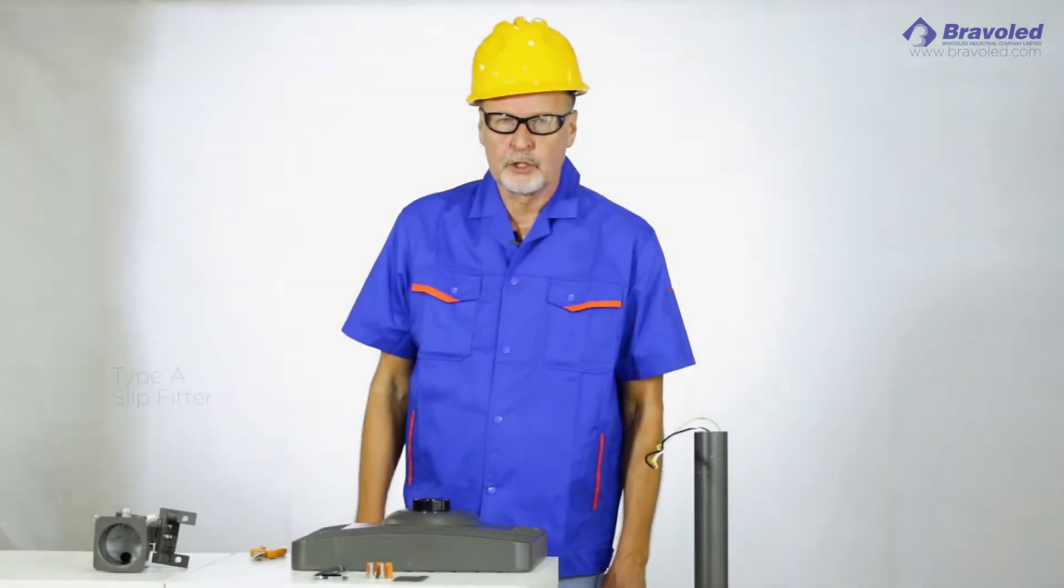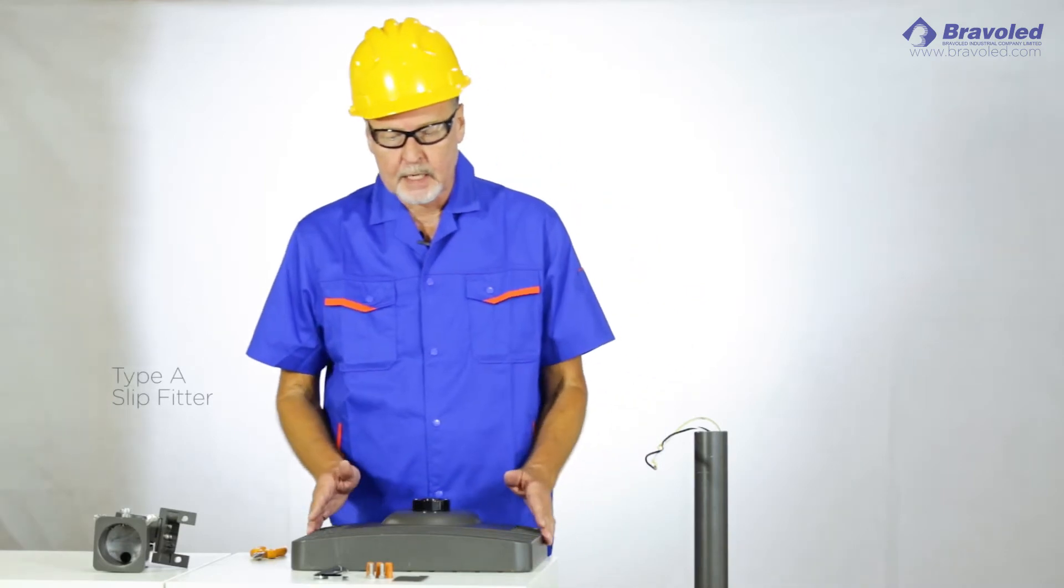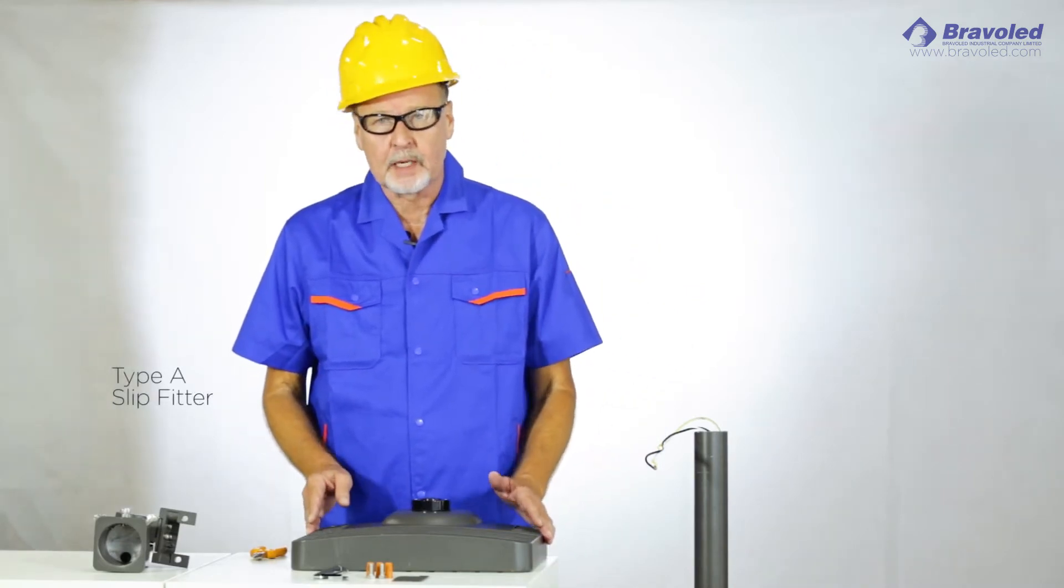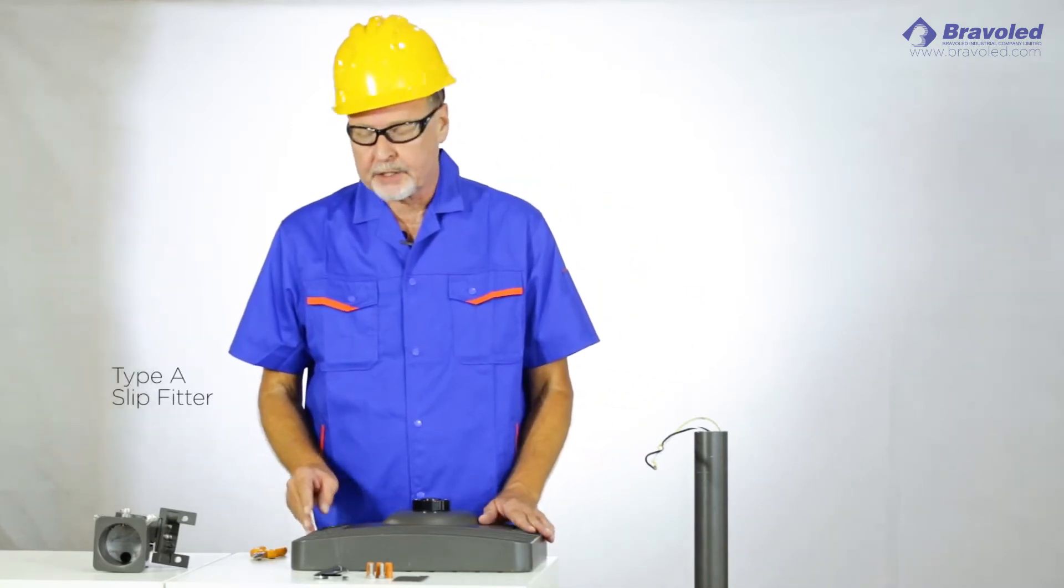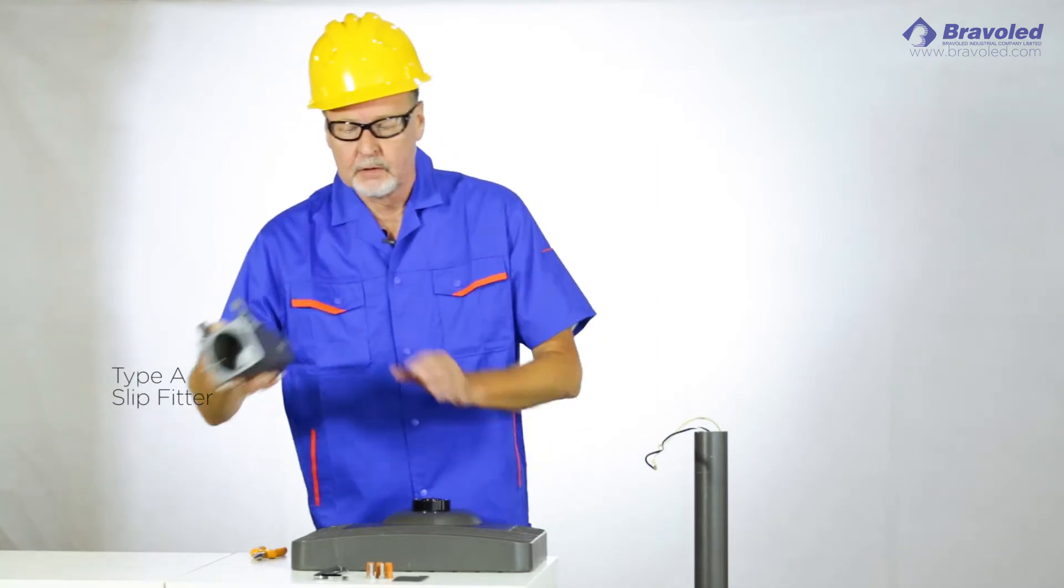This is the Bravo LED shoebox parking lot light. We're going to talk about the type A installation, which is a slip fitter joint.